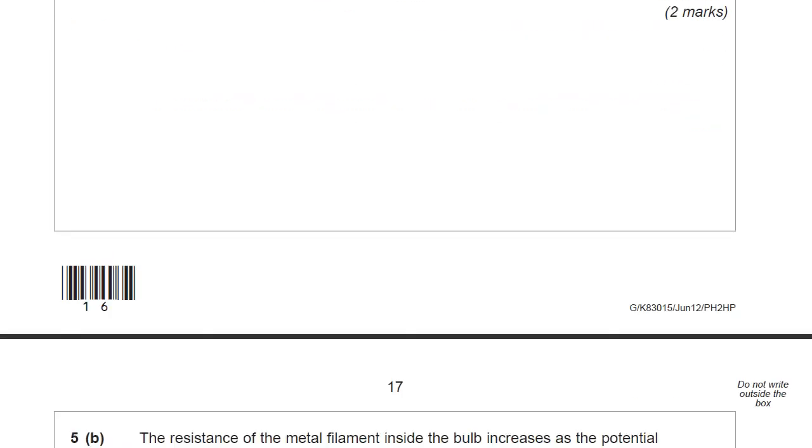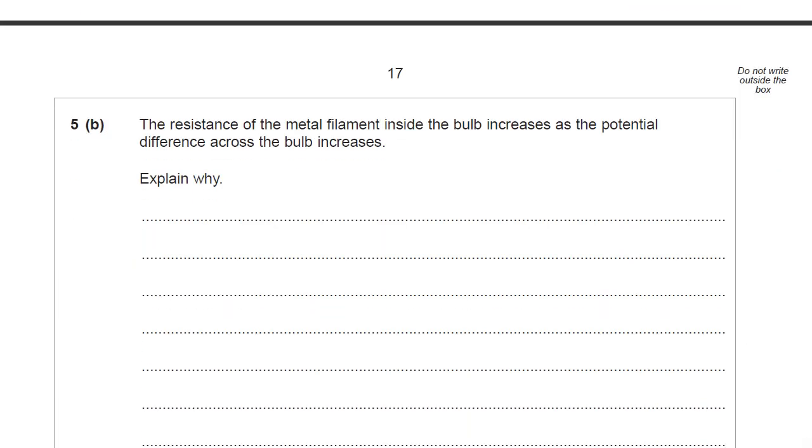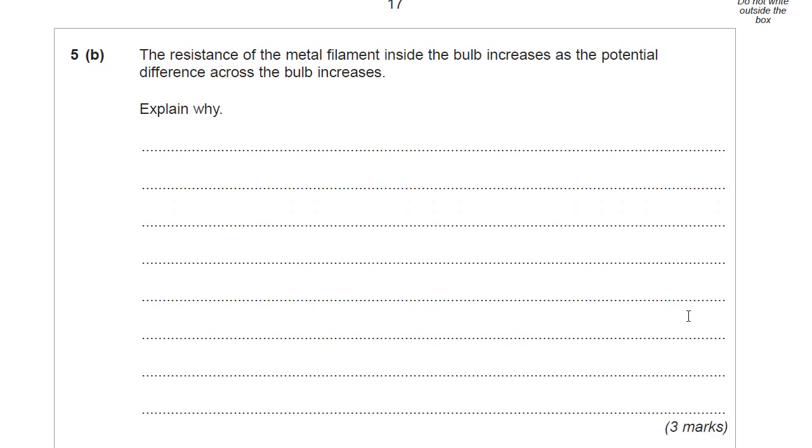Next question then. It asks us, why does the resistance increase? That strange curve that I was talking about is because of the increase of resistance as you increase the potential difference. So why does that happen? Let's have a look here. It's worth three marks. So think about it step by step. Three things, three points you can make about why the potential difference increases. I'll give you a moment to have a go at that.